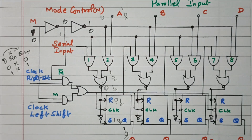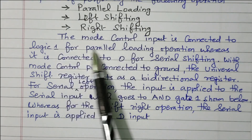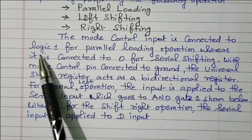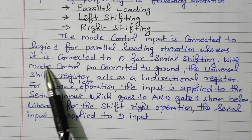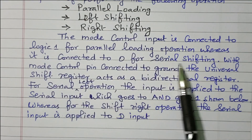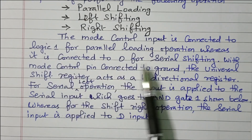In this video we discussed the universal shift register performing three operations: parallel loading, shift right, and shift left. M equal to 1 means parallel loading; M equal to 0 means right-shift or left-shift serial operation.